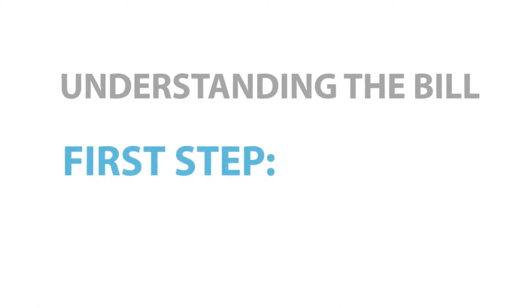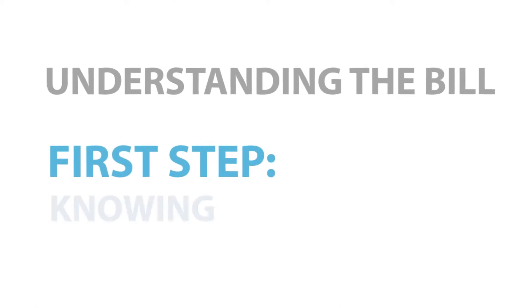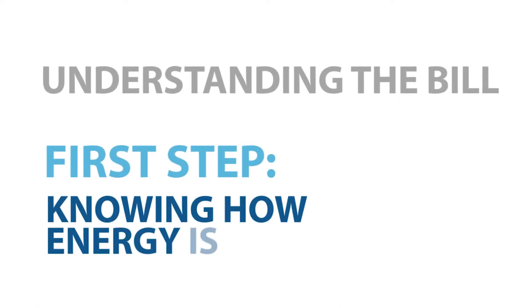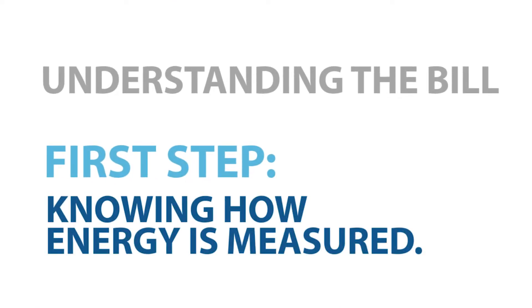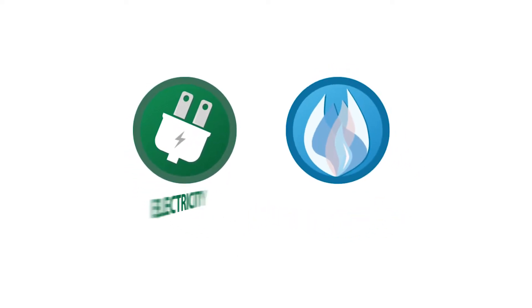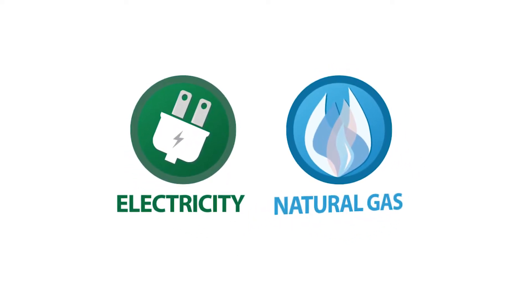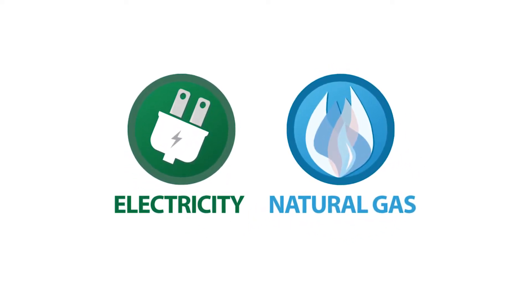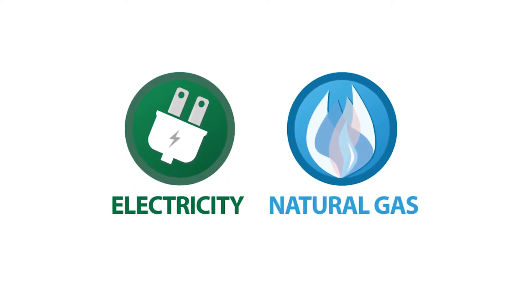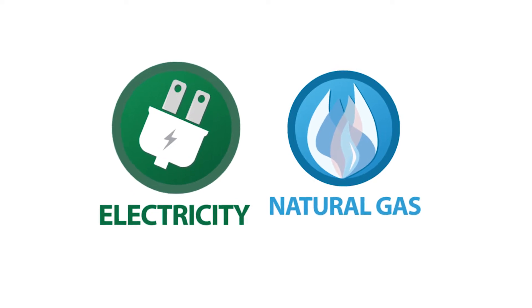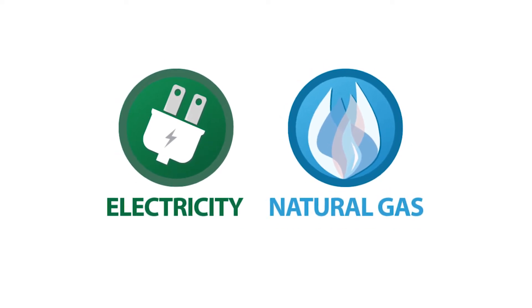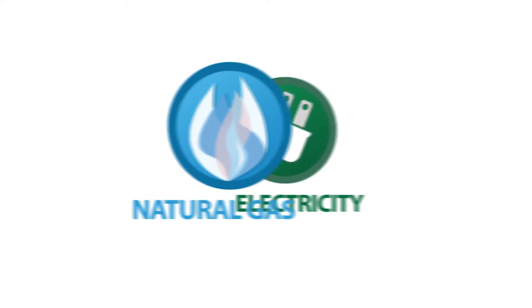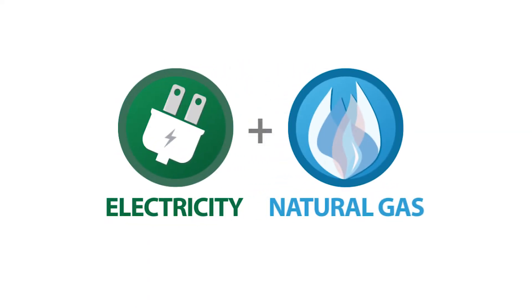The first step in understanding the bill is knowing how energy is measured. Most energy suppliers offer two different forms of energy: electricity and natural gas. Your home or business might use one or the other, or it may use a combination of both.